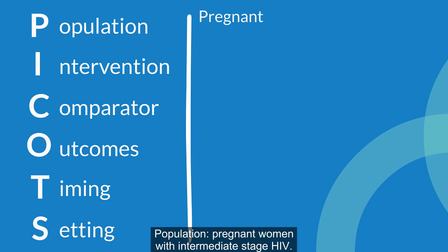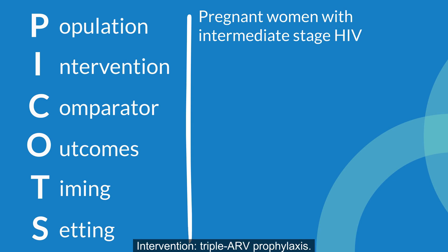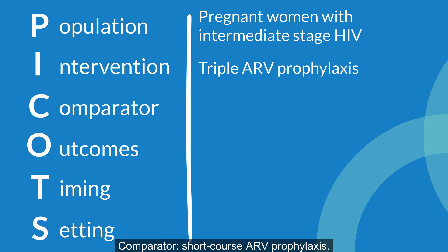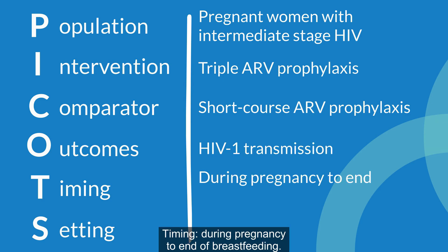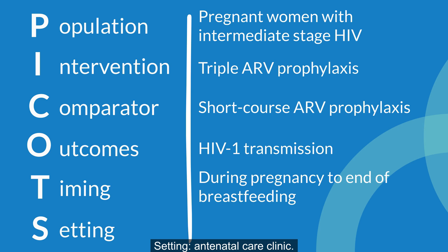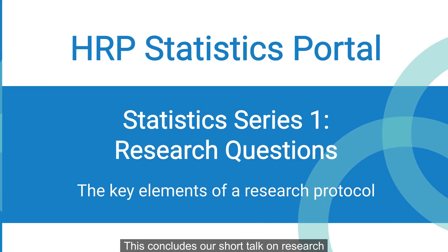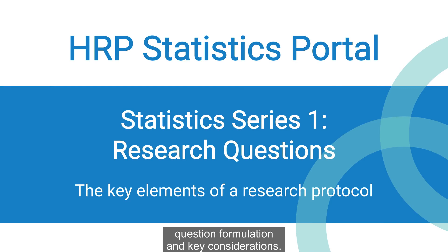Population: pregnant women with intermediate-stage HIV. Intervention: triple ARV prophylaxis. Comparator: short-course ARV prophylaxis. Outcomes: HIV-1 transmission. Timing: during pregnancy to end of breastfeeding. Setting: antenatal care clinic. This concludes our short talk on research question formulation and key considerations.